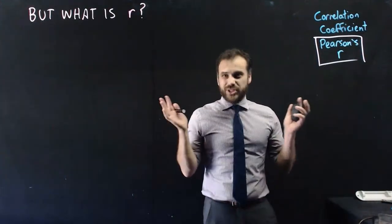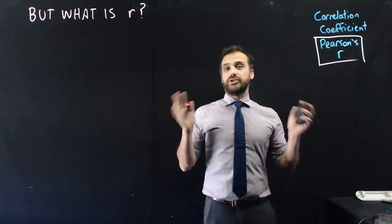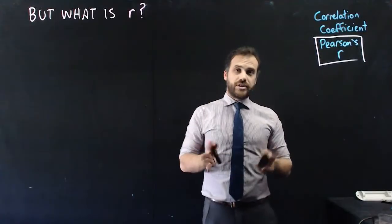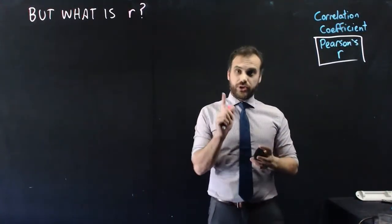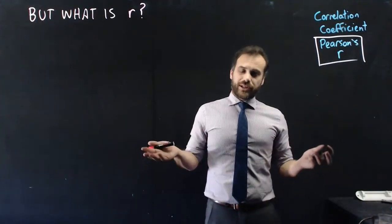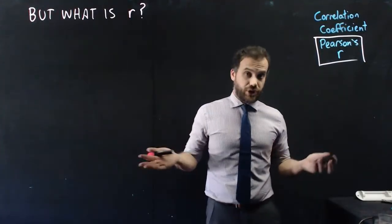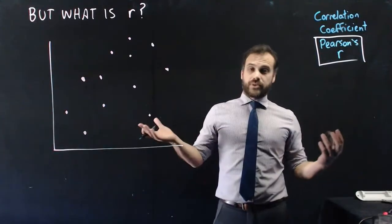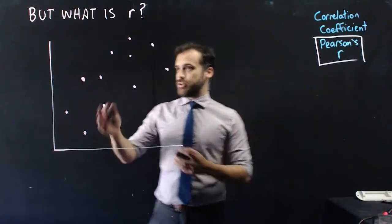So you know r is a number that measures linear association. You know it can go between negative 1 and 1, but I haven't told you how to calculate it. Now, if you're interested, you should stick around, because I'll explain kind of how it's calculated, but you should know it's very complicated to calculate this, and there's a low likelihood that anyone would ever ask you to calculate it using the formula I'm about to show you. So if you're still here, thanks. It means you're a curious person. I appreciate you.